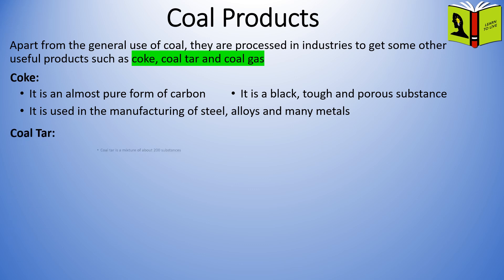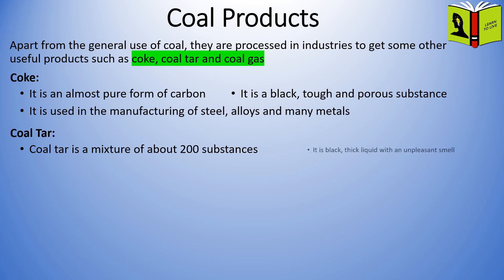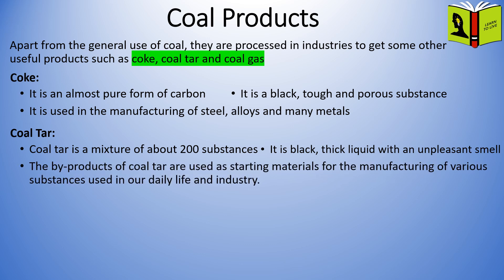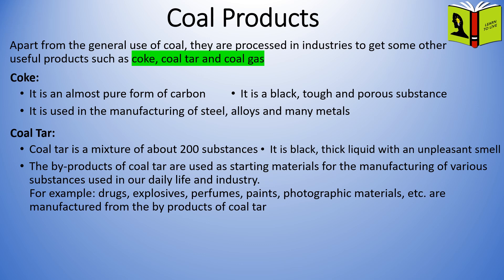Coal tar: coal tar is a mixture of about 200 substances. It is a black, thick liquid with an unpleasant smell. The by-products of coal tar are used as starting materials for the manufacturing of various substances used in our daily life and industry. For example, drugs, explosives, perfumes, paints, photographic materials, etc. are manufactured from the by-products of coal tar.